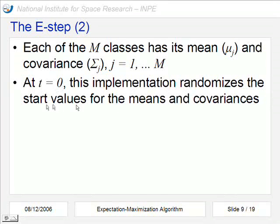Each of the m classes has its mean and covariance. As already said, at the beginning at t equals zero, this implementation randomizes the start values for the means and the covariance.